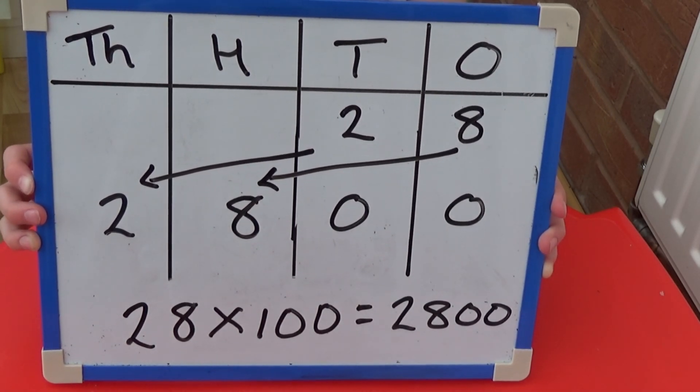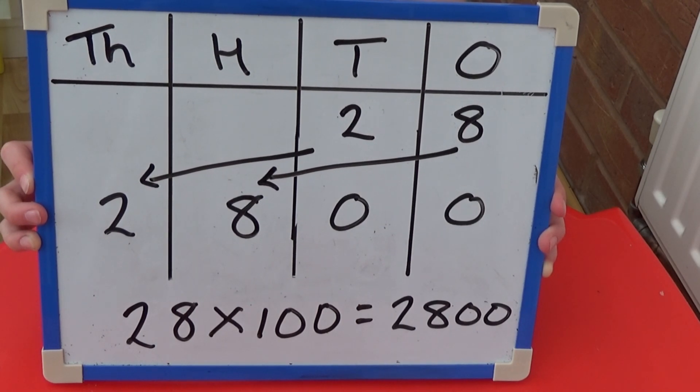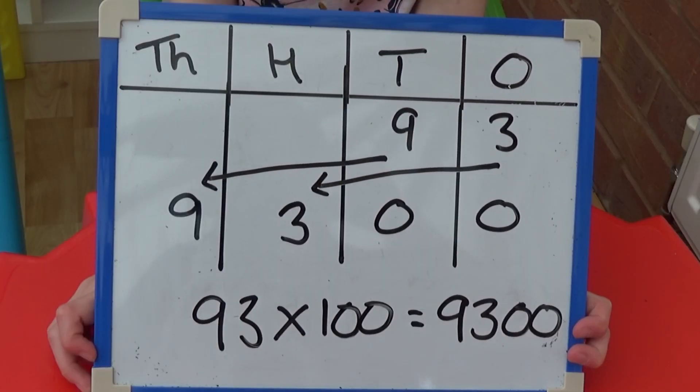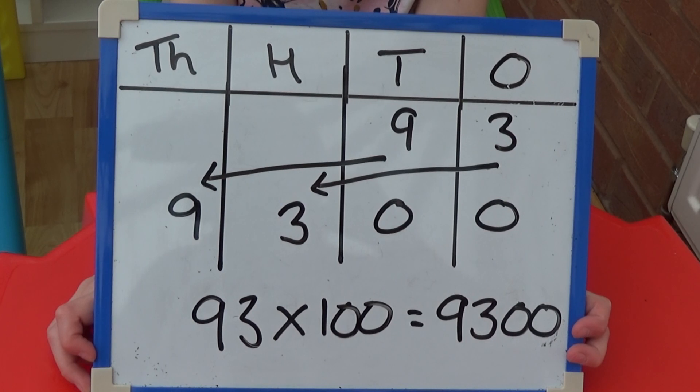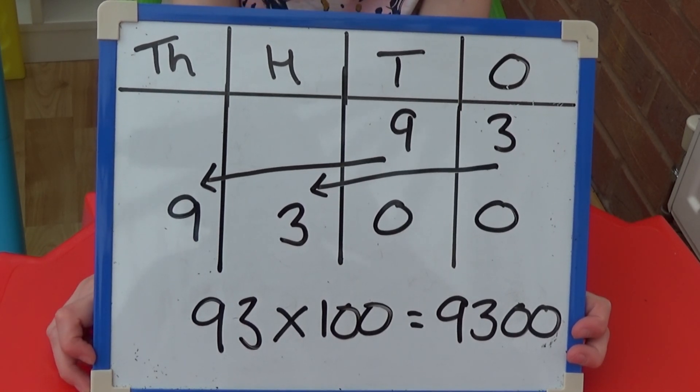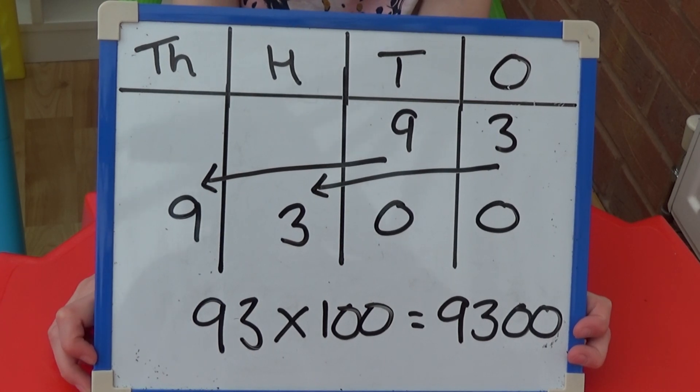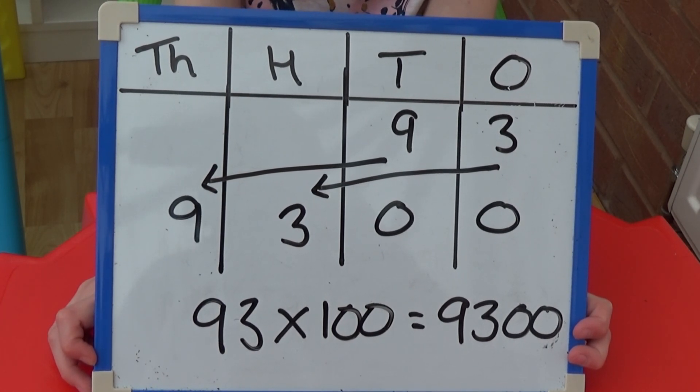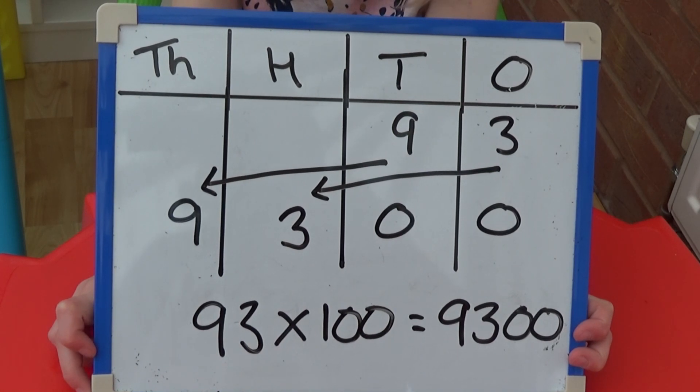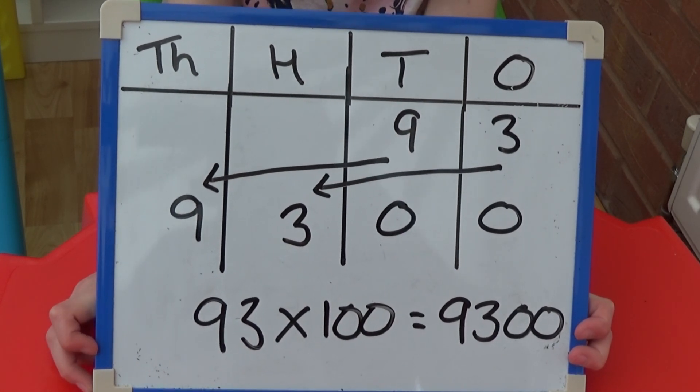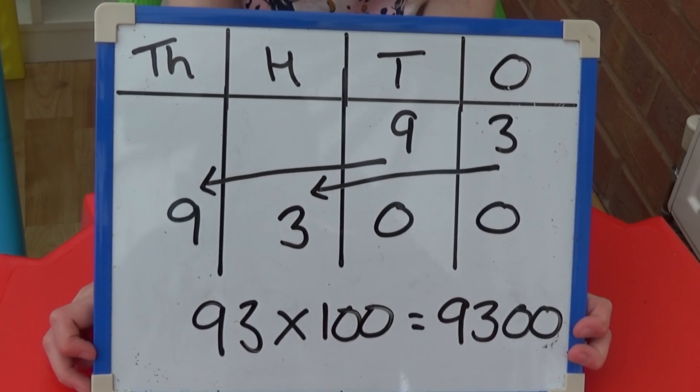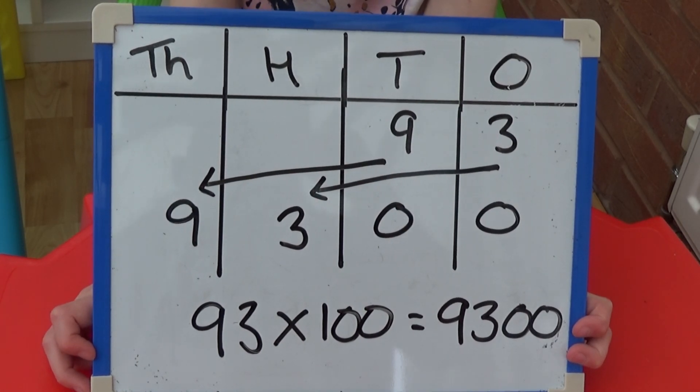For 93 times 100, each digit moves 2 columns to the left. So 90 becomes 9,000 and 3 becomes 300. And we add 0s to the 10s and 1s column. So 93 times 100 equals 9,300.